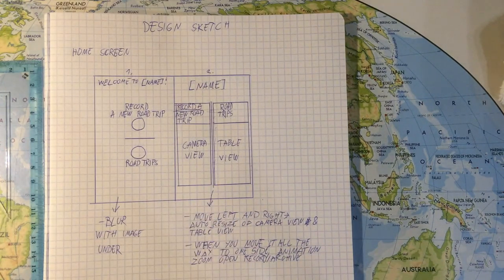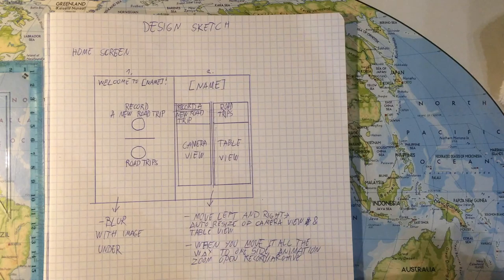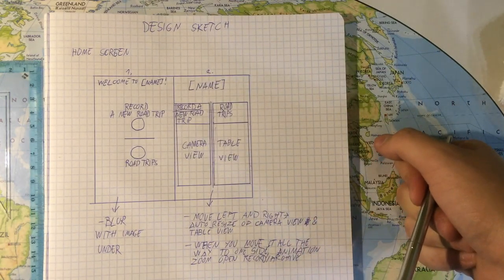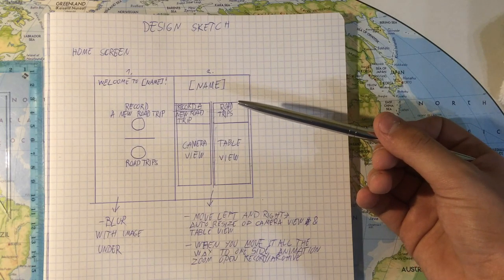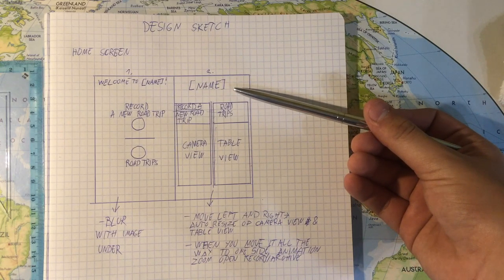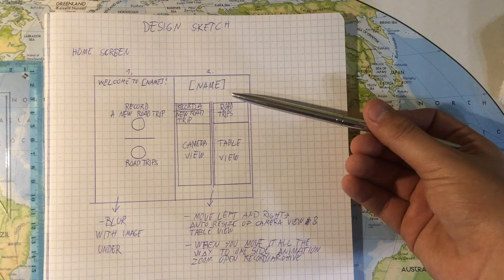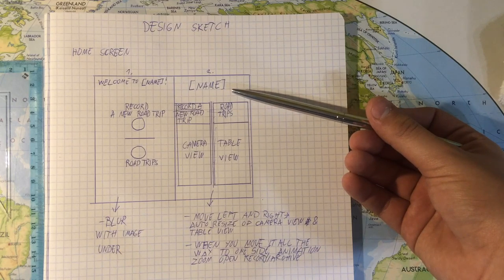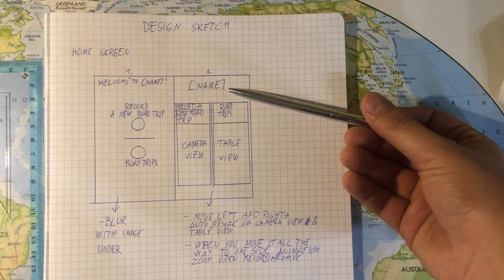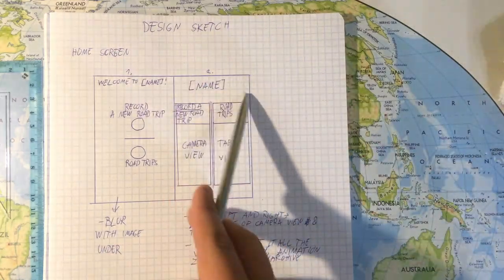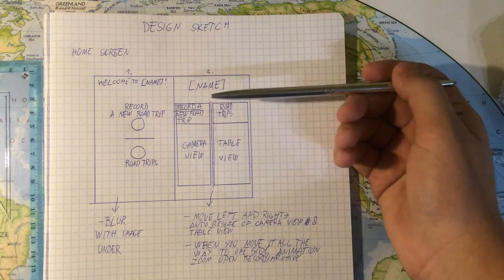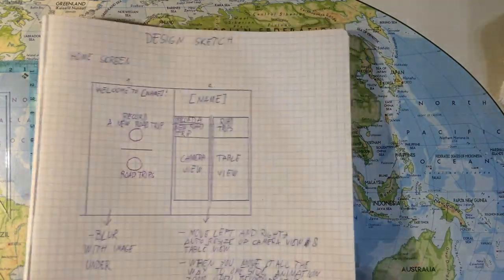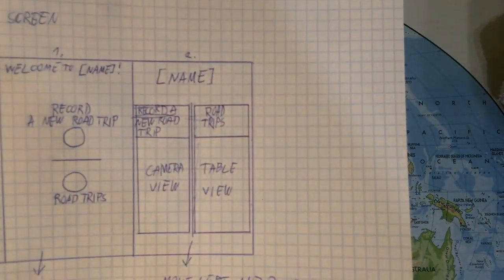The background is going to be an image view, on top of it a blur view, and then all the app elements. Now here it's going to get a little bit interesting, let me just move this here.